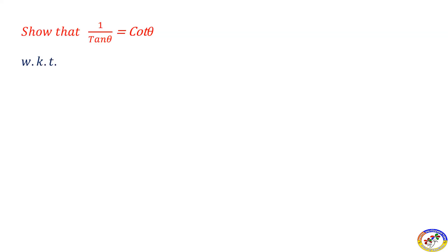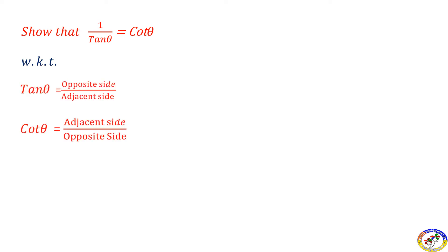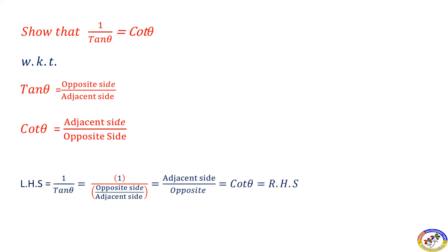1 by tan θ is equal to cot θ. Using the tan θ formula, we get the right-hand side. Therefore, 1 by tan θ is equal to cot θ.